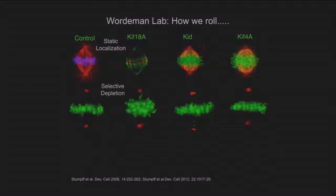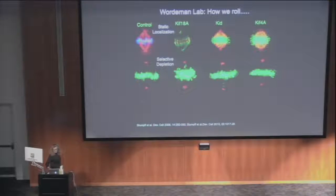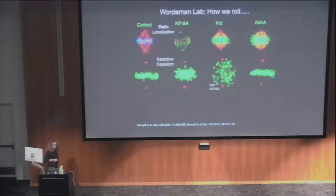Then, in order to understand their function in cells, we'll selectively deplete them — previously by siRNA, nowadays more by CRISPR. We'll try to parameterize something about the mitotic spindle so we can measure the effect of the loss of these proteins. For example, we measure what these molecules contribute to congression — the lining up of chromosomes at the spindle mid-zone prior to anaphase. We can see that when we knock down KIF18A, the chromosomes have more trouble lining up at the spindle.